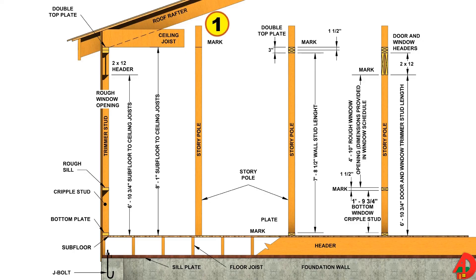Steps for using a story pole: 1. Measure and mark rough wall height on story pole. 2. Mark position of bottom and double top plates. 3. Mark position of header. Measure down for rough window.